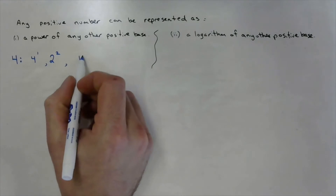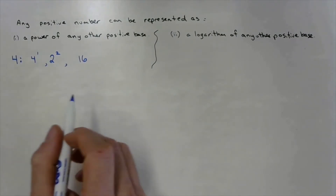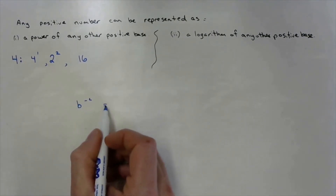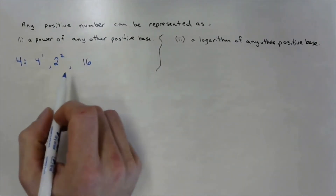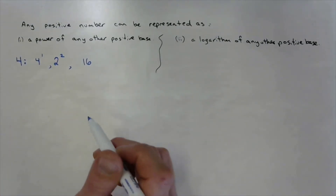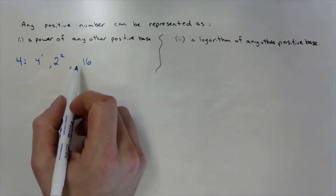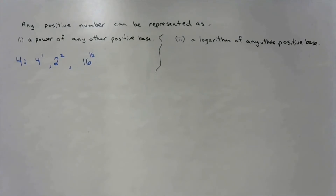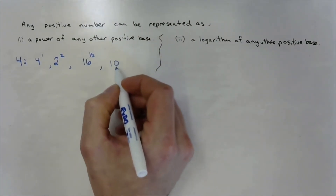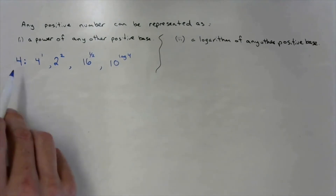What if we start with a base of sixteen? We need the square root of sixteen, which is sixteen to the power of one half. You can also take ten to the power of log four and you'll get four.